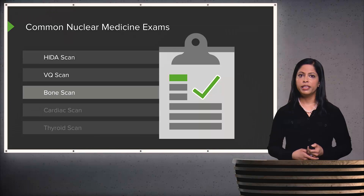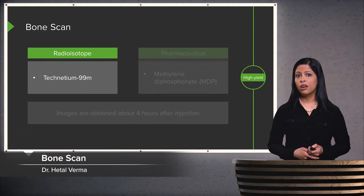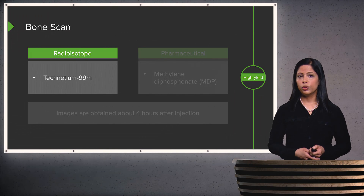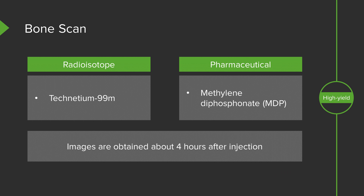Let's move on and discuss bone scans. Bone scans are very commonly performed. The radioisotope that's used is technetium-99m, and the pharmaceutical is methylene diphosphonate, or MDP. The images are usually obtained about four hours after injection, which allows the radiotracer to be taken up into the bones.